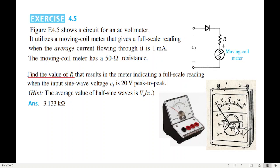Moving coil, if you look at the coil where it moves, you can move along the right-left depending on the current. So it utilizes a moving coil meter that gives a full-scale reading when the average current flowing through it is 1 milliampere. So when 1 milliampere average current flows through it, it is a full-scale value.